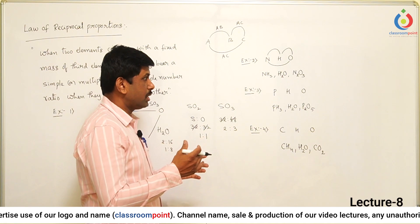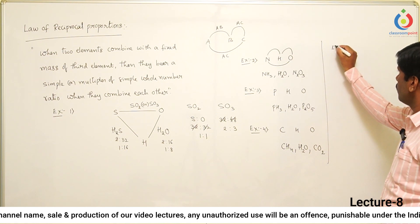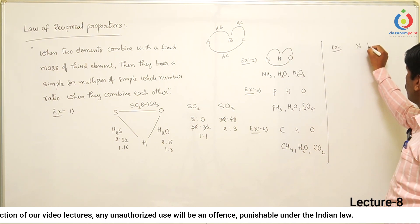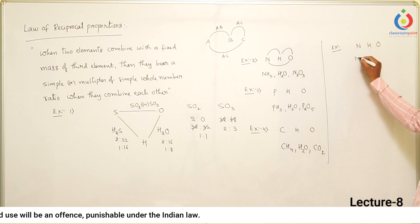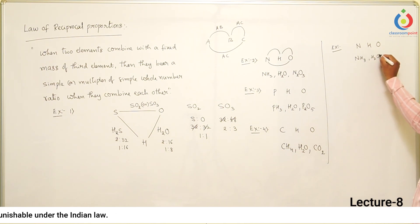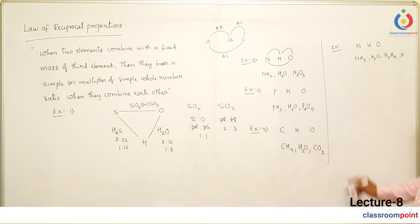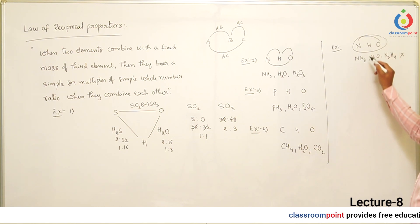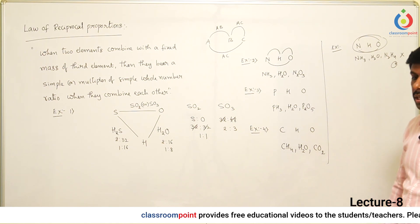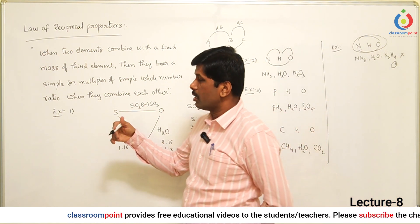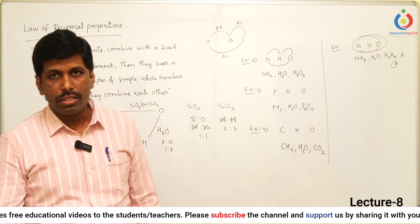If any two compounds share only the same two elements — for example, taking nitrogen, hydrogen, and oxygen but getting ammonia (NH₃), H₂O, and N₂H₄ — then it is NOT following the law of reciprocal proportions, even though 3 elements are present. Because the nitrogen–oxygen combination is missing. So all 3 combinations must be present. Only then can we say that such a group of molecules follows the law of reciprocal proportions.